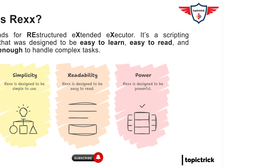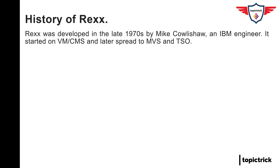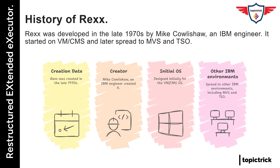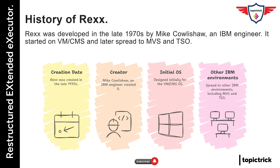Now a quick bit of history. REXX was developed back in the late 1970s by Mike Cowlishaw, an engineer at IBM. He built it originally for the VM/CMS operating system, and from there it made its way into other IBM systems like MVS and TSO. Over time, it earned its place in the mainframe world — and honestly, it stuck around for some really good reasons.